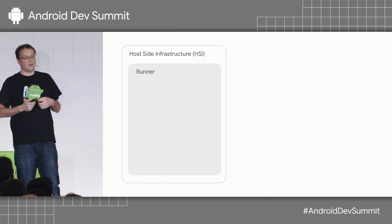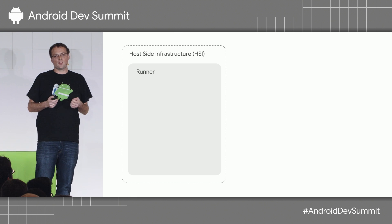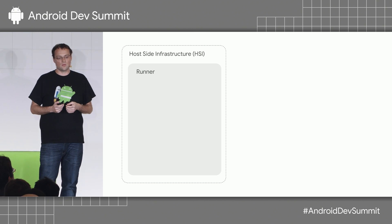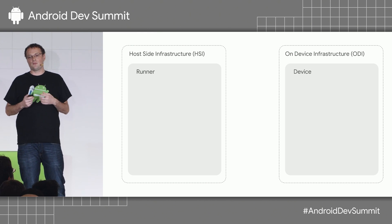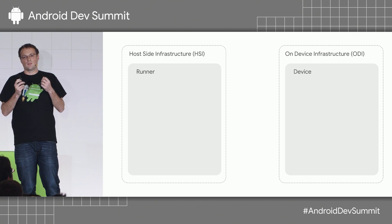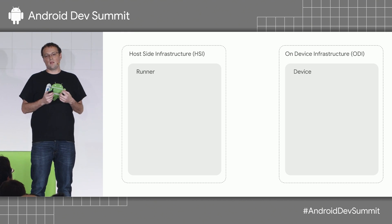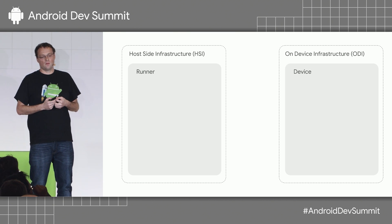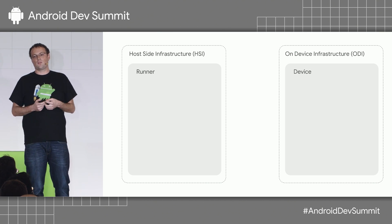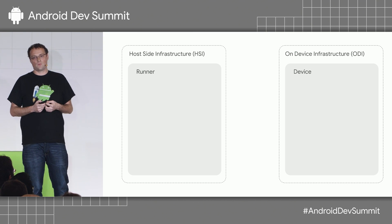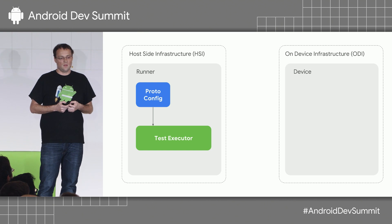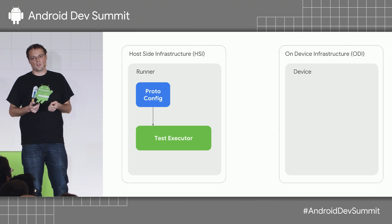Let's talk about the high-level architecture of Nitrogen. Nitrogen is basically split into two parts: a host-side infrastructure — all the code that runs on the host — and an on-device infrastructure, meaning we've moved some of our infrastructure onto the device, which is a much saner environment to reason about. The device is also the main abstraction we use in Nitrogen for different runtimes. The host-side runner is mostly responsible for finding a device, setting up the device for test execution, and then requesting a test run. It can be easily configured with a protobuf configuration and allows you to customize things like the test executor and the whole test harness.